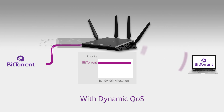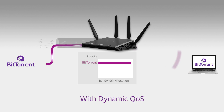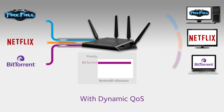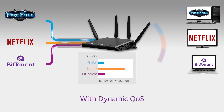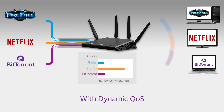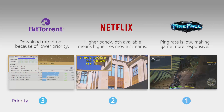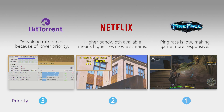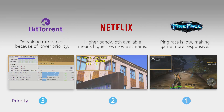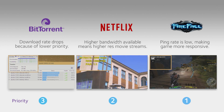As before, when the laptop begins the BitTorrent download, the router allocates the available bandwidth for it. But then, when the Netflix video and the online game begin, the router adjusts the bandwidth allocation, giving less bandwidth and lower priority to the BitTorrent download. The router's Dynamic QoS prioritizes the connected devices, making sure each gets the bandwidth it needs for the best connected experience.